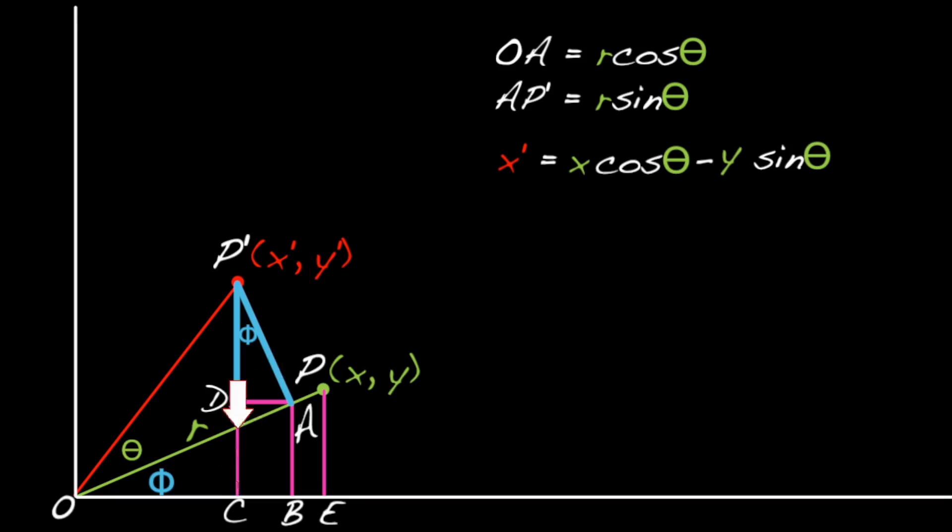So, we're halfway there. Now, we just need to know what Y prime is. CP prime is Y prime. And it can be written as CP prime equals DP prime plus AB.